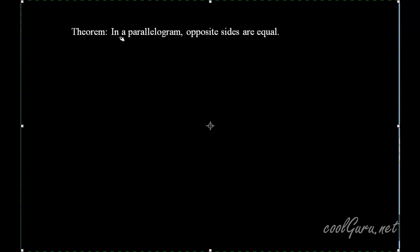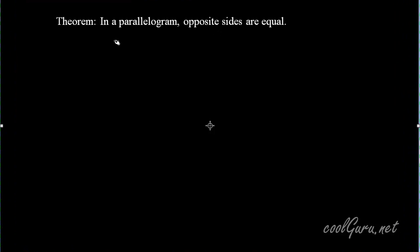Now we will prove this theorem that in a parallelogram, opposite sides are equal. Let ABCD be a parallelogram. We have to prove that opposite sides are equal, that is AB is equal to CD and AD is equal to BC.